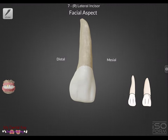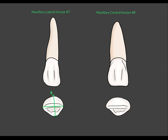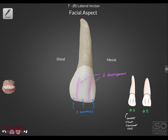Here we're showing the facial aspect of the maxillary lateral incisor. You'll notice right off the bat that these teeth are smaller than the maxillary central incisors in every aspect except for root length. The disto-incisal point angle is much more rounded than the mesial incisal. The laterals tend to have a more sloped disto-incisal angle compared to central incisors, which can help differentiate between the two. There are three mamelons and two developmental depressions, but these are less noticeable than those on the maxillary central incisor.